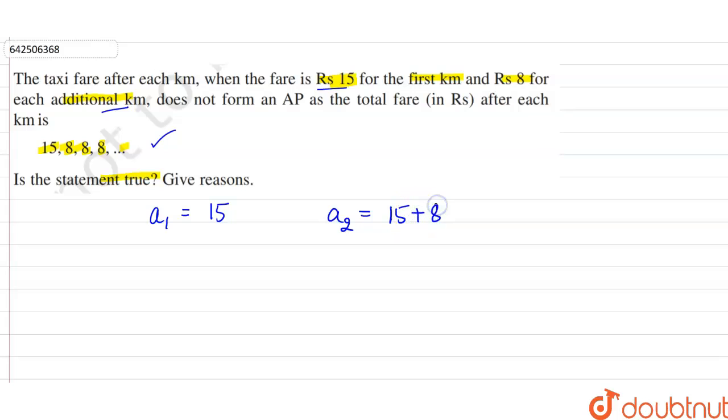Now the second fare is Rs.15 for the first kilometer and Rs.8 for the additional kilometer. For the second kilometer it is Rs.8, so 15 + 8 = 23. So the fare is Rs.23 for the second kilometer.